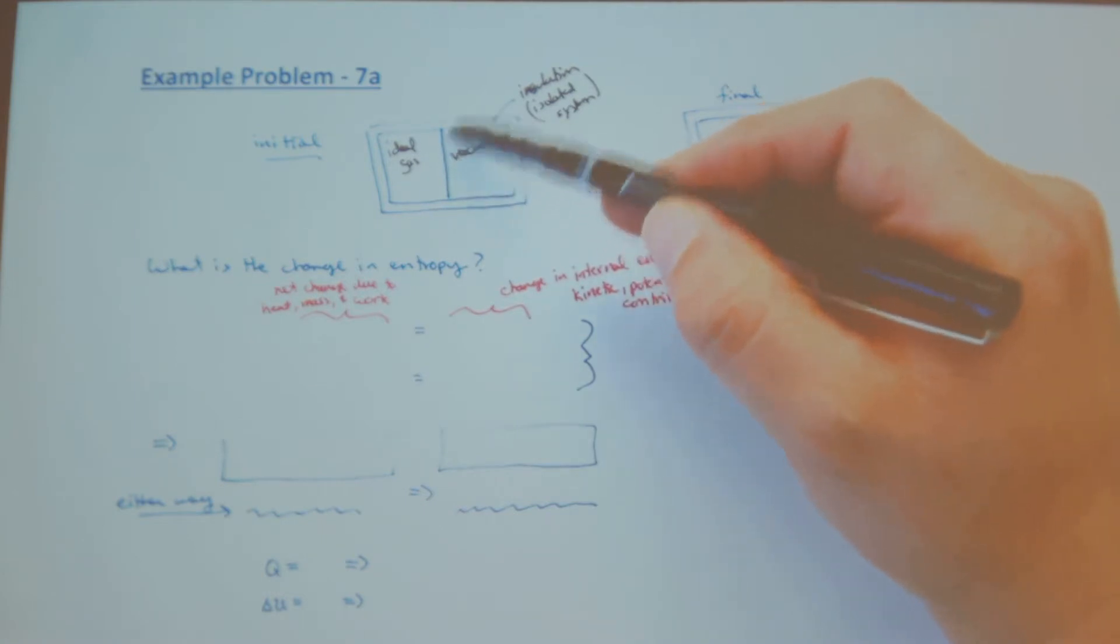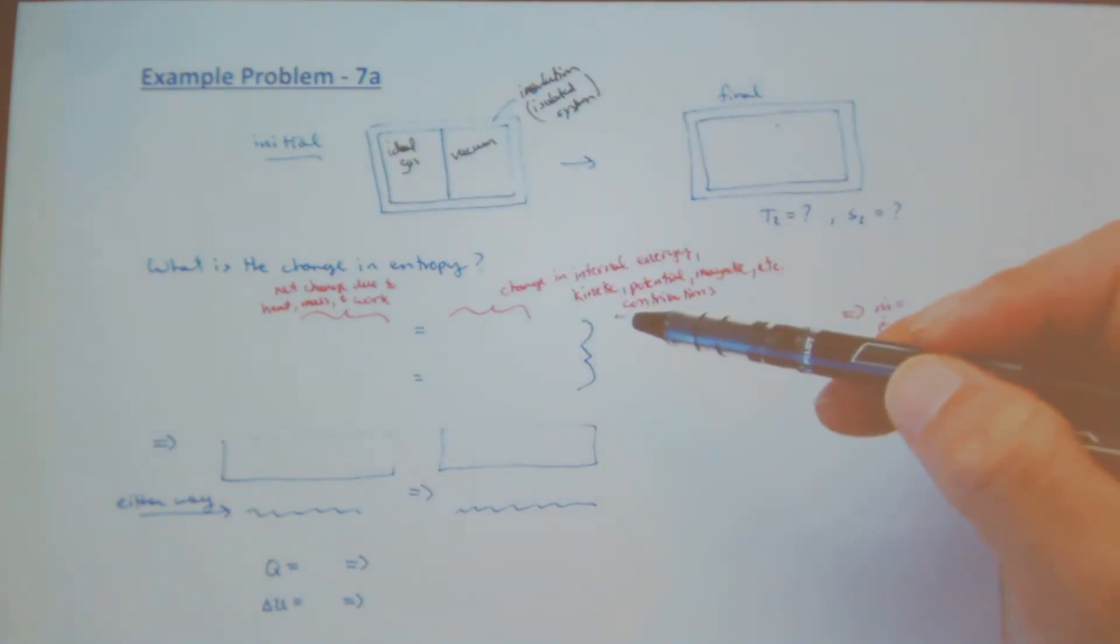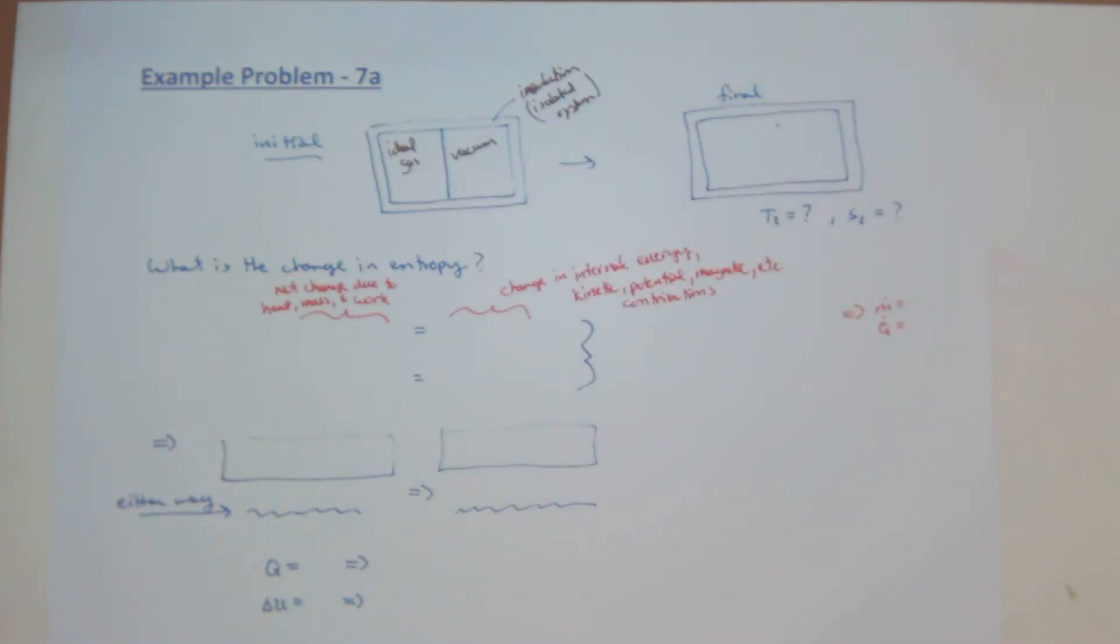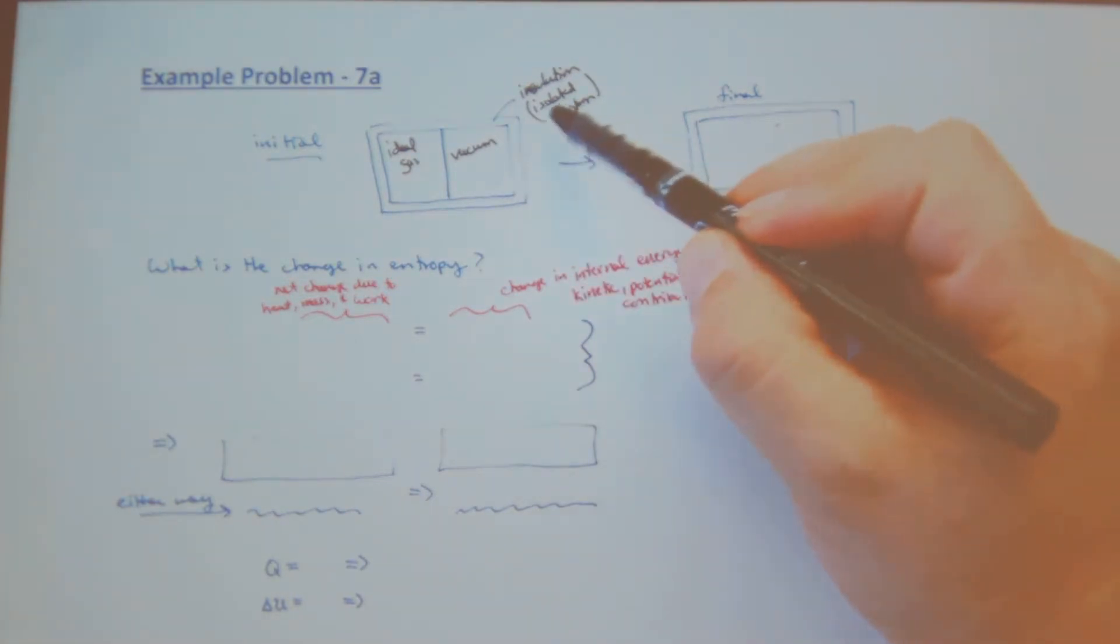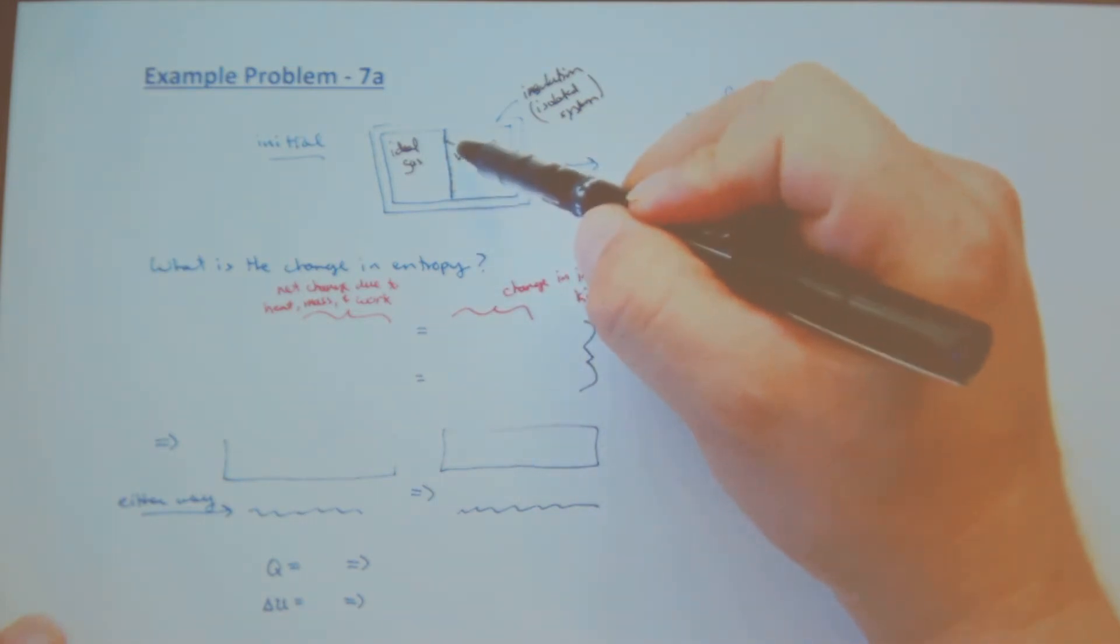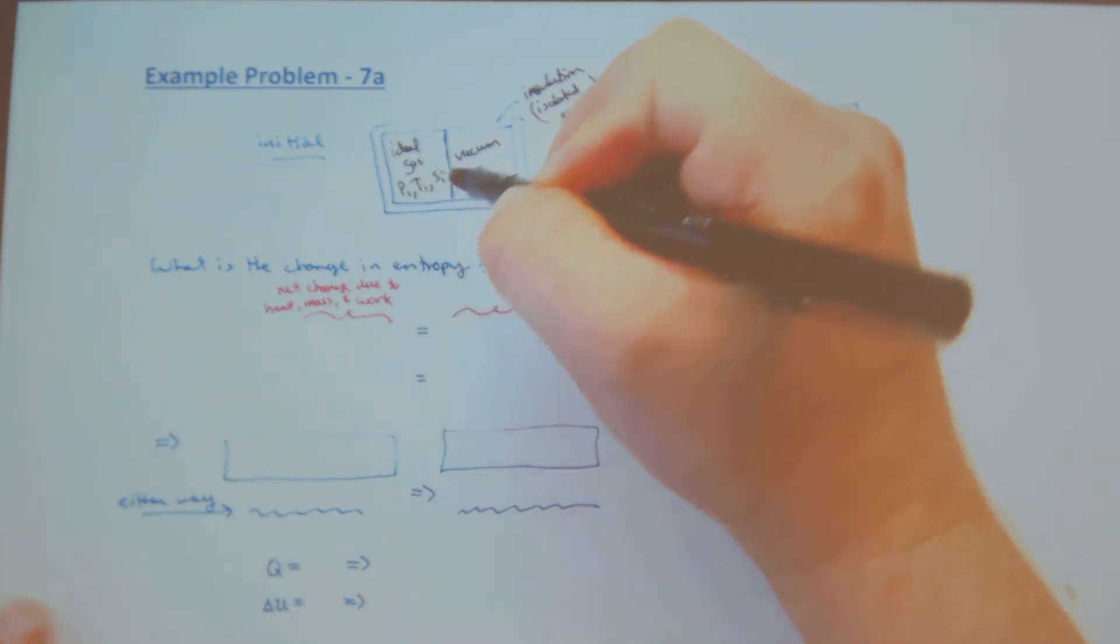There's no heat or mass transfer, and my boundary is so good that I don't have any change in control volume. The boundary doesn't stay. So it's a rigid, impermeable boundary to both heat and mass. I have this temporary membrane that separates my ideal gas on this side and my vacuum. Given it's an ideal gas, I have an initial pressure, temperature, and thus entropy.